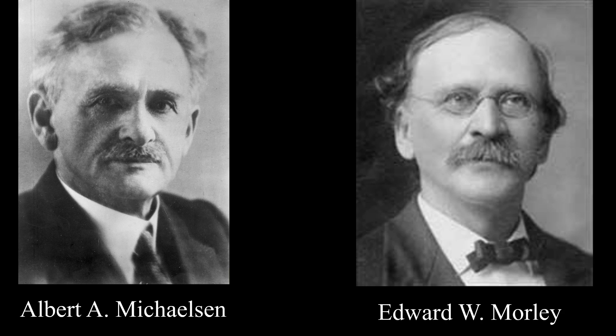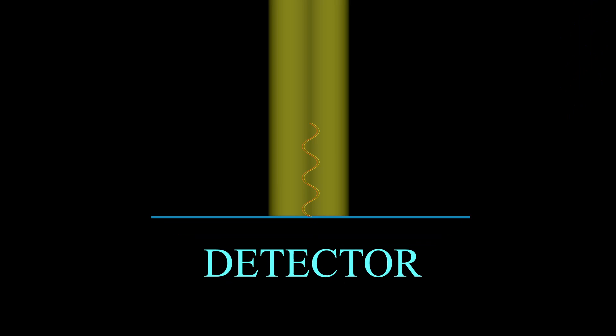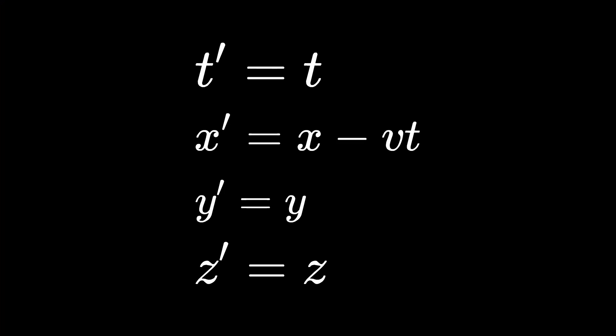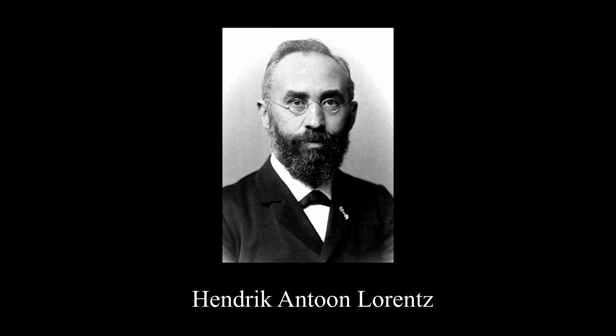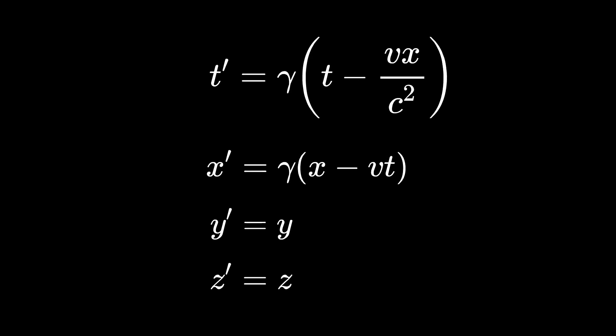Then there were Michelson and Morley, who tried to find a global inertial frame of reference for electromagnetism — but failed. The famous Michelson-Morley experiment measured the speed of light in two different directions using interference patterns on a detector, and found that the speed of light is the same in all directions. Since Maxwell's equations had a problem with Galilean transformations, Henrik Lorentz calculated how the proper transformation rules should look for Maxwell's equations, and came up with what are called the Lorentz transformations.